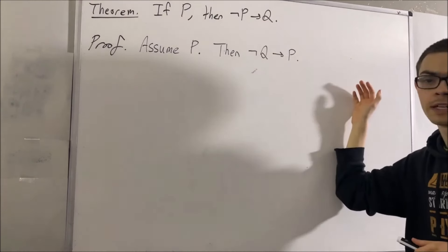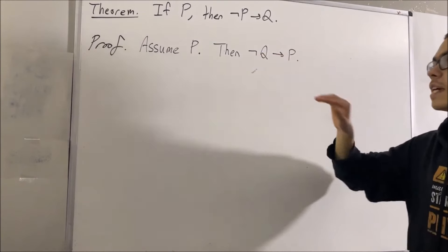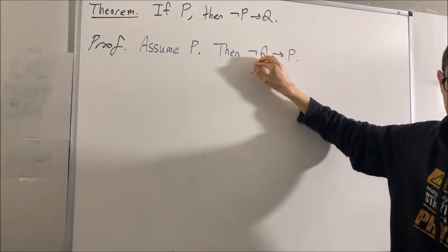So let's start out by assuming that P is true. Our whole goal now is to deduce that not P implies Q.